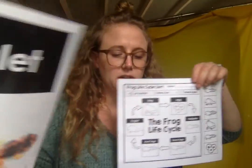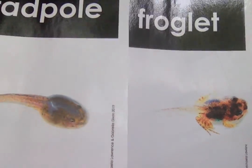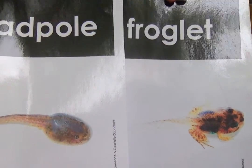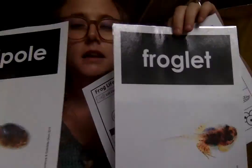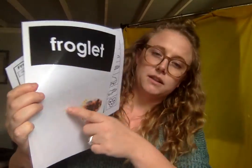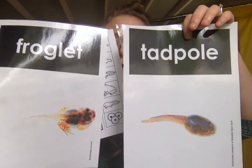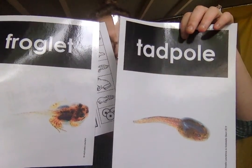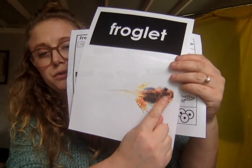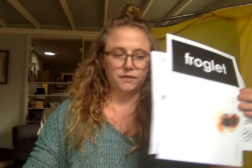The next part of our life cycle is a froglet. I want you to look at when our tadpole grows up to be a froglet — what are the similarities? What are some things that are the same? They both have tails still. You can see the froglet's tail. But what's different? What's one thing that's different about these two things? The froglet has legs. He has two front legs and two back legs. Looks a little bit more like a frog, huh?